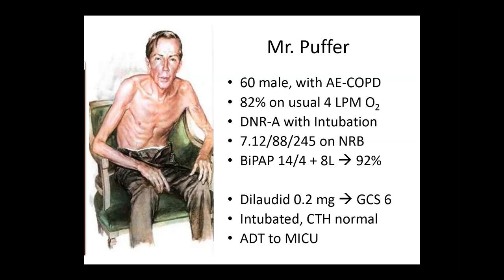While on a non-rebreather, the PaO2 is very high, which you don't like. So you put the patient on BiPAP, trying to fix the hypercapnia with settings of 14 over 4 and 8 liters of oxygen. This results in a saturation of 92% — you're happy, but the patient is not. The patient starts pulling on the mask, saying he can't breathe, very anxious with psychomotor agitation. You give Dilaudid 0.2 mg, being very cautious, however the GCS drops and you end up intubating the patient.